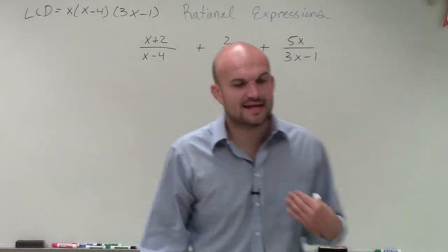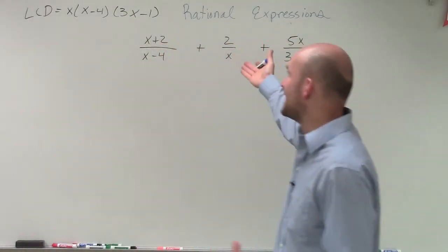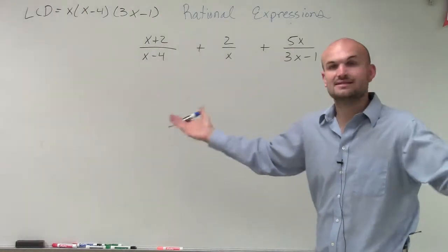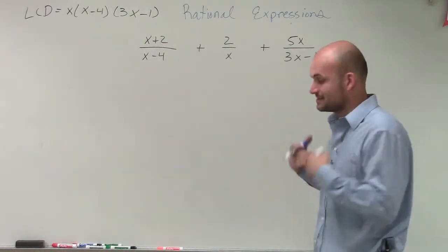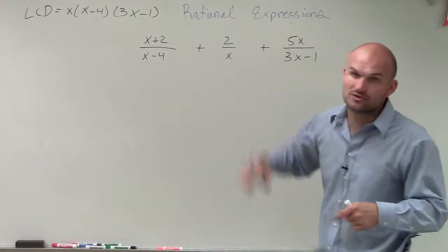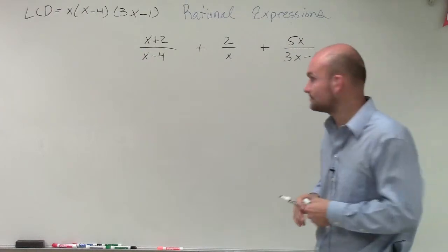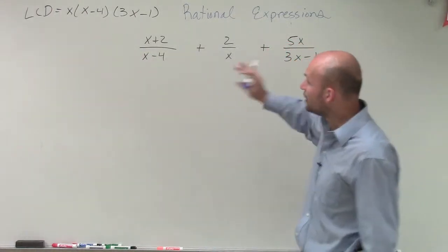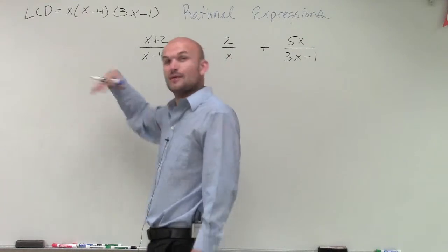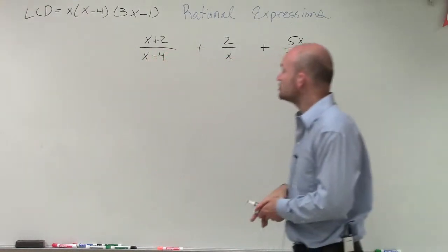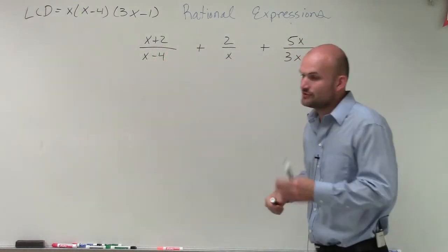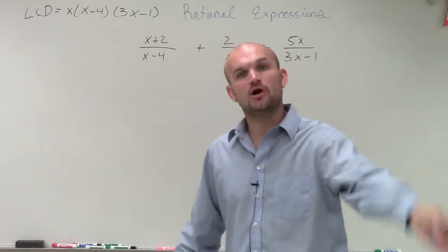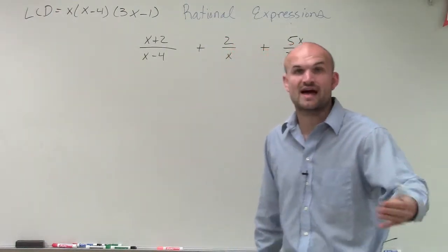That means if each one of my denominators can contain all of those values, then they will be my least common denominator — that's the smallest denominator that each one of those can have in common. We look at each one of my denominators: they all have a part of the LCD, but they're missing the other two factors. So I'm going to have to multiply the denominator by those missing values.